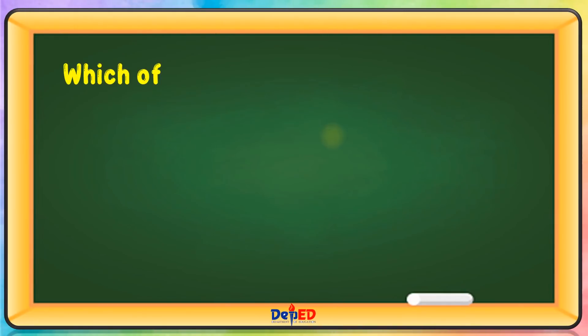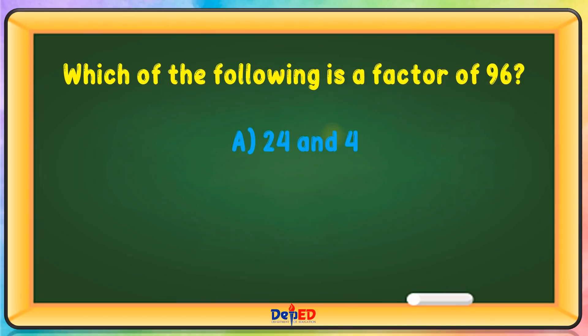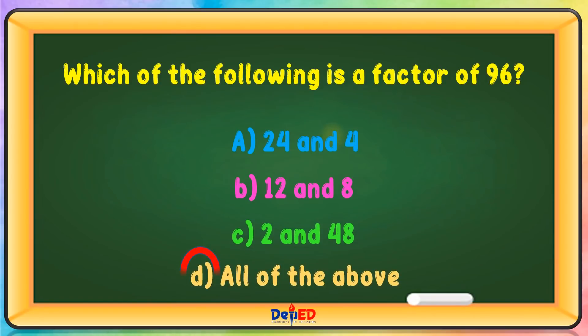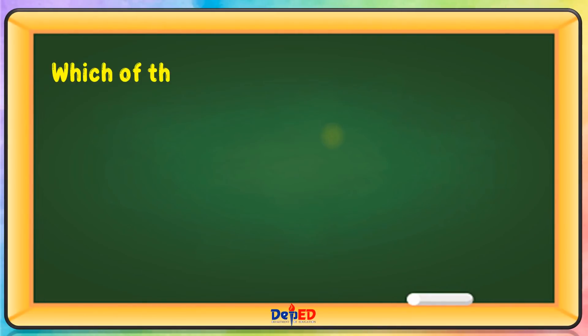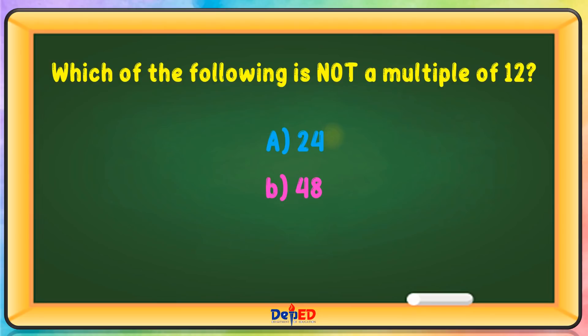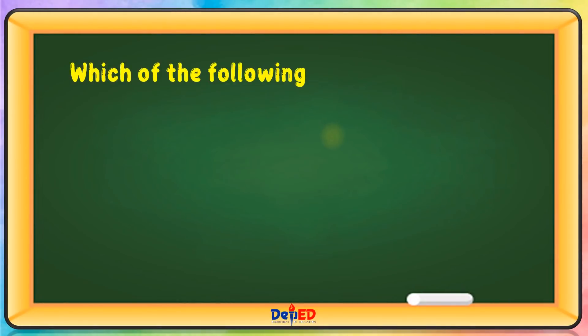Which of the following is a factor of 96? A. 24 and 4. B. 12 and 8. C. 2 and 48. D. All of the above. The correct answer is D. Which of the following is not a multiple of 12? A. 24. B. 48. C. 73. D. 96. The correct answer is C.